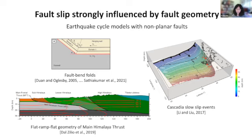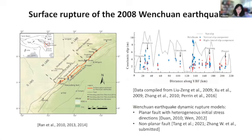On top of that, we have tried to look at how the large-scale megathrust fault geometry might have on the episodic tremor and slip events, again with the focus on the Cascadia subduction zone. So what I want to focus on today is the Yingxiu-Beichuan fault that has hosted the 2008 Wenchuan earthquake — not just because this is a very complicated fault system with very heterogeneous co-seismic slip, as we can see from the figure to the right showing surface ruptures compiled from a number of studies.